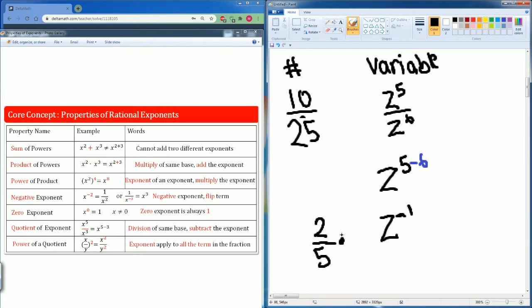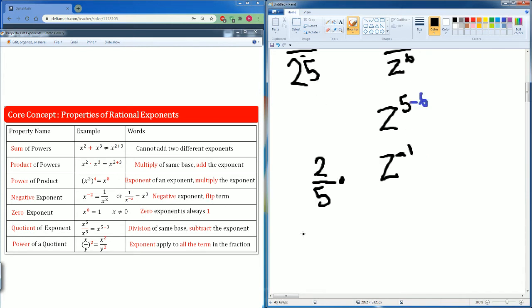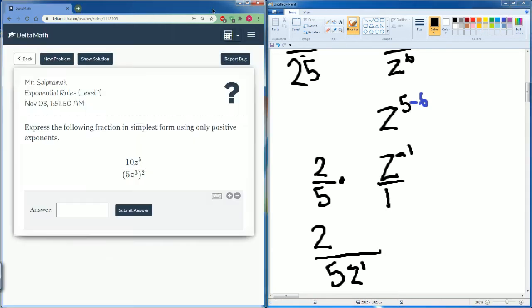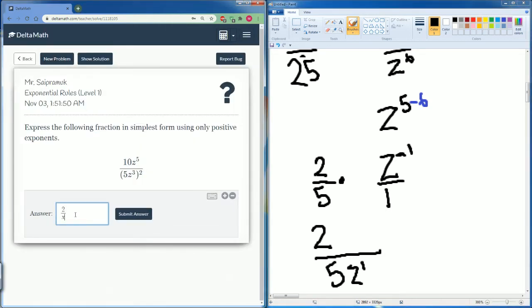They do not like the negative 1 power here so what we are going to do is negative exponent you flip the terms. So it becomes 2 is on top 5 is on bottom. The z to the negative 1 was on top now it comes to the bottom. So your final answer is 2 divided by 5z and z is to the first power but we never write it to the first power.